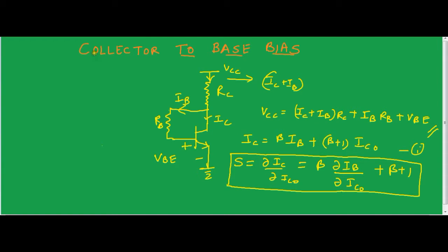In order to get the stability factor of this circuit, we need to find the value of delta IB upon delta ICO for this circuit. Once we find that, we can substitute that value into the general equation and calculate the stability factor. We need to get delta IB upon delta ICO from the KVL equation: VCC = (IC plus IB) into RC plus IB RB plus VBE.